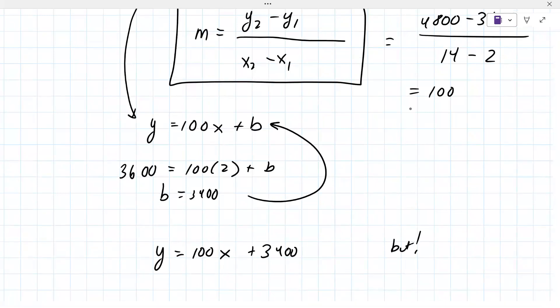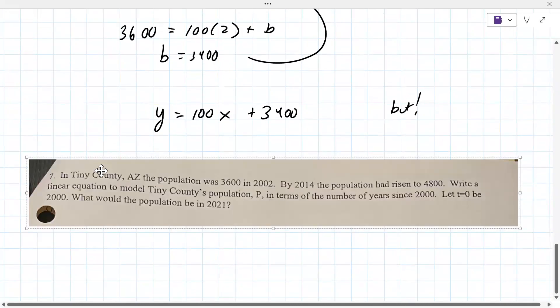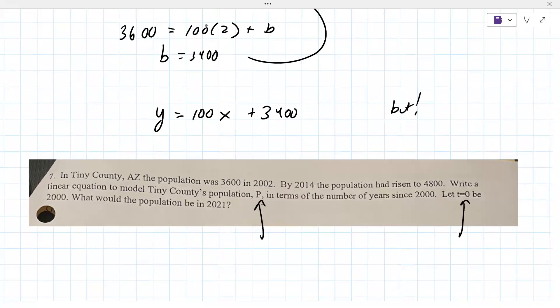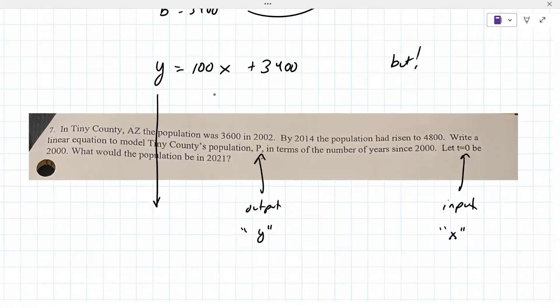But, and this is a big but, the problem doesn't say to use Y and X. It says to use P and T. And you have to decide, which is which? T is the input, which is the X. P is the output, which is Y. What I would tell you to do as a student is to do it in terms of Y and X, like you've always done. And then at the end, change it, say Y is really P. And X is T.